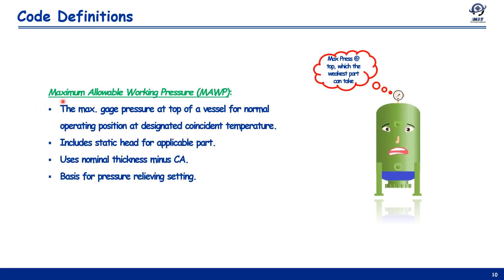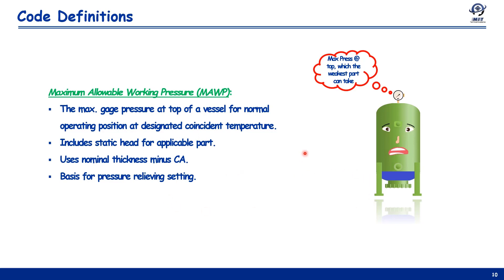Another important term is Maximum Allowable Working Pressure, or MAWP. This is the maximum gauge pressure at the top of a vessel for normal operating position at the designated coincident temperature. Normal operating position means either a vertical or horizontal vessel — in whichever case, the pressure gauge at the top of the vessel is calculated. It also includes static head for applicable parts, specifically for lower parts in liquid service, where static head due to the liquid column has its maximum value at the bottom of the vessel.